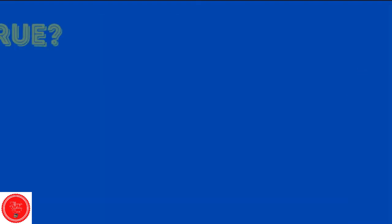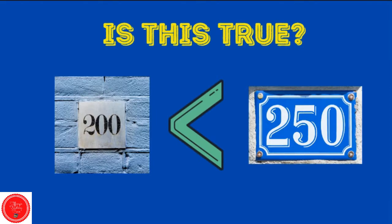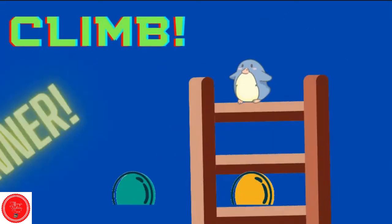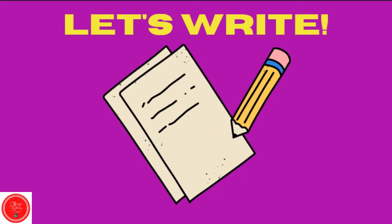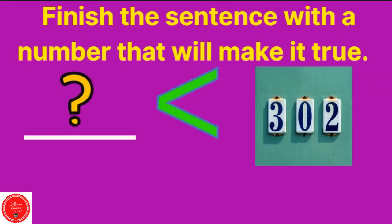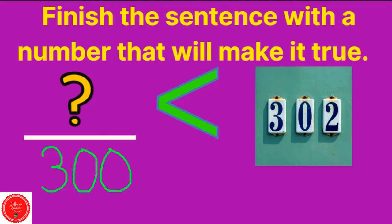Is this true? 200 is less than 250. Yes. Good job. Let's write — grab some paper or a whiteboard. Finish the sentence with a number that will make it true. Here I have blank is less than 302. The mouth is eating 302, which means it's the bigger number, so I need a number that's smaller. We can put a lot of different answers here. I'm going to choose 300. 300 is less than 302. You can choose any number that's smaller than 302.